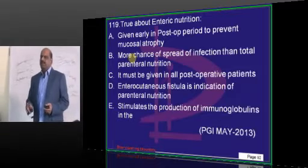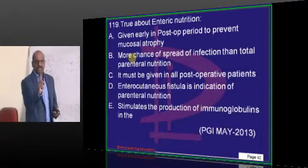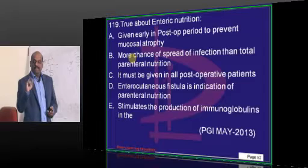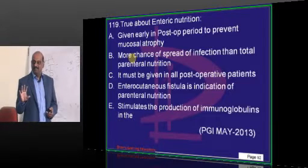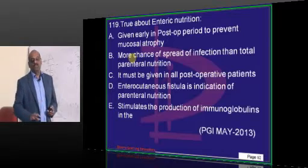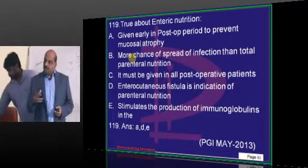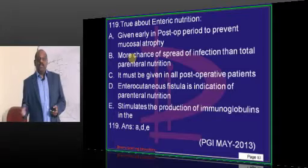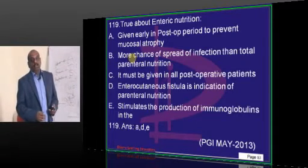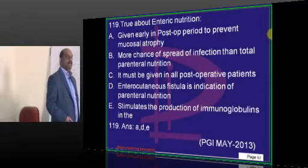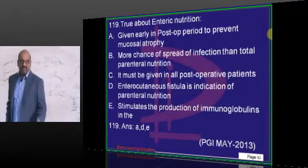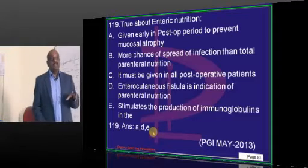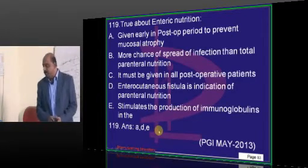Enteral versus parenteral nutrition is a question asked in every PG medical entrance. Post-operatively, we give enteral nutrition to keep the gut active and avoid development of mucosal atrophy. If there is an entero-cutaneous fistula, that becomes an indication for parenteral nutrition instead of enteral. Enteral nutrition stimulates production of local secretory immunoglobulins produced in the gut.